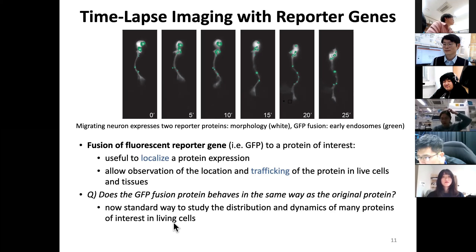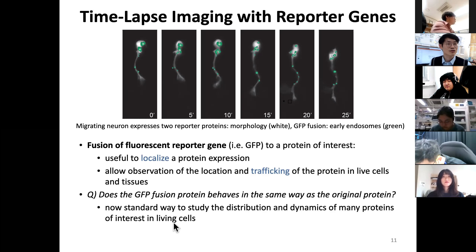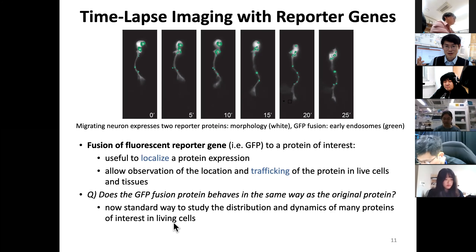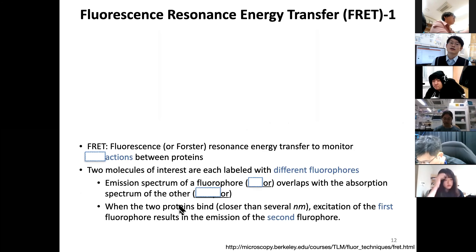One caveat: introducing a fluorescent protein can change cell physiology. GFP is very stable and relatively inert. But other fluorescent proteins such as red fluorescent protein require multimerization — tetramer or dimer — which is bigger and can change cell physiology. You always have to ask whether what you are seeing truly reflects the biology and physiology you're looking for. It's great to have the tool to see, but always question whether your observations represent the true behavior.